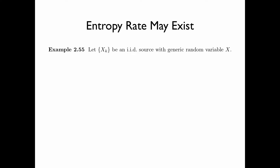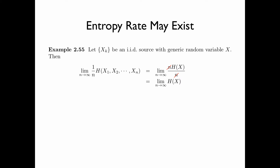We first look at example 2.55. Let x sub k be an iid source with generic random variable x. Then the limit as n tends to infinity of 1 over n times the joint entropy of x1, x2, up to xn equals the limit as n tends to infinity of n times the entropy of x divided by n, which is simply equal to the entropy of x. That is, the entropy rate of an iid source is the entropy of any of its single letters.